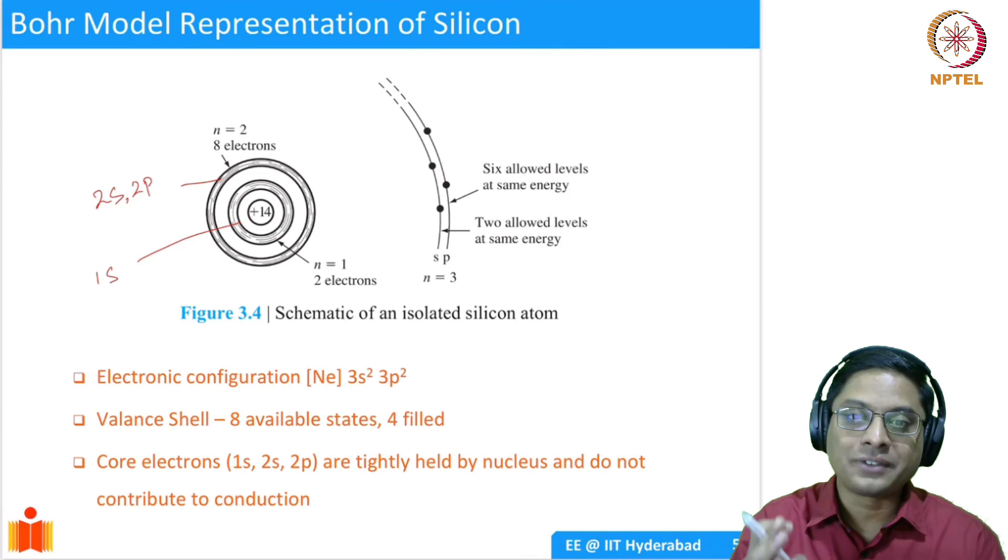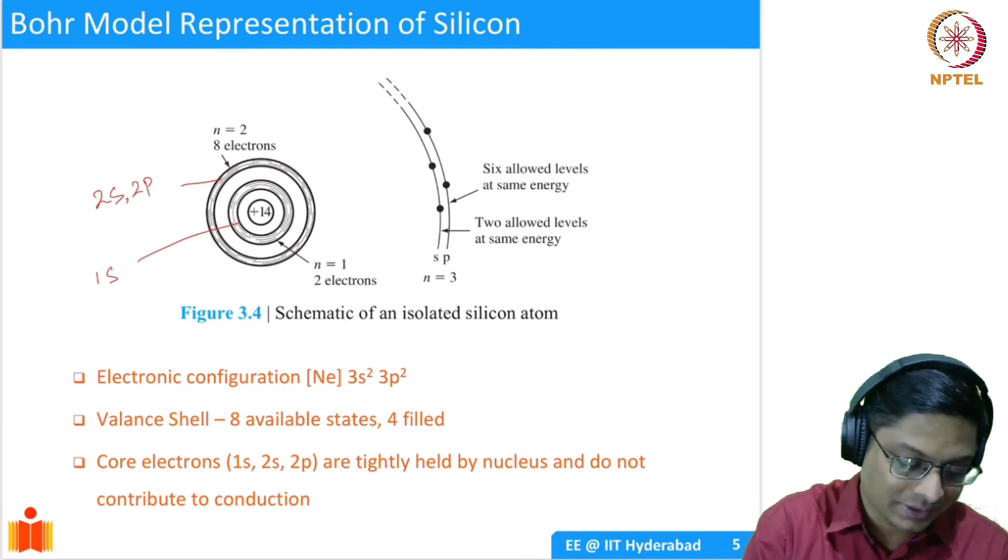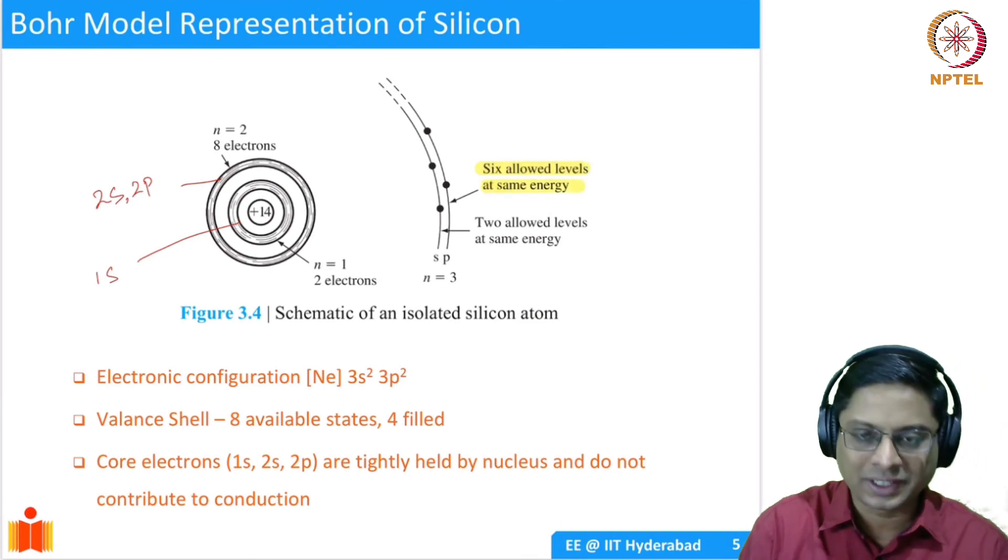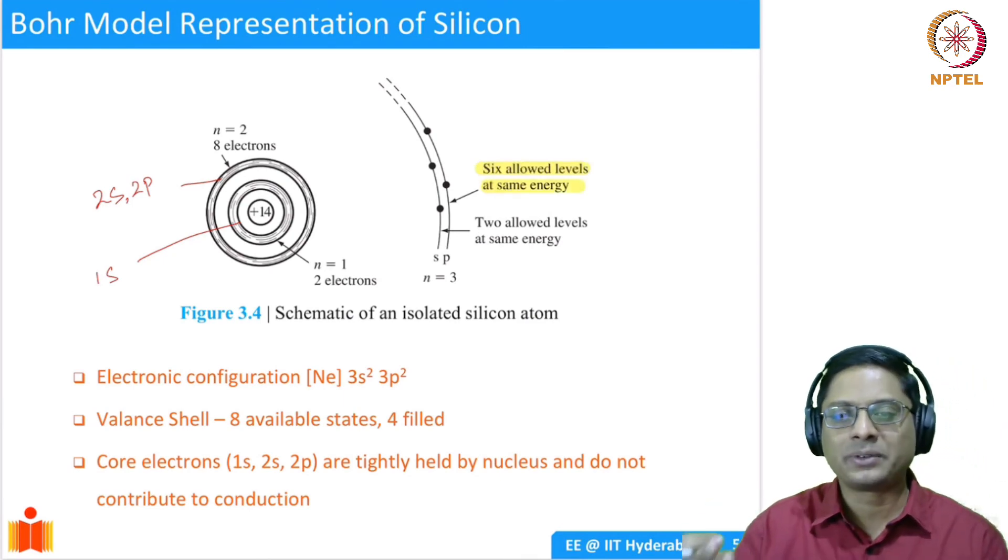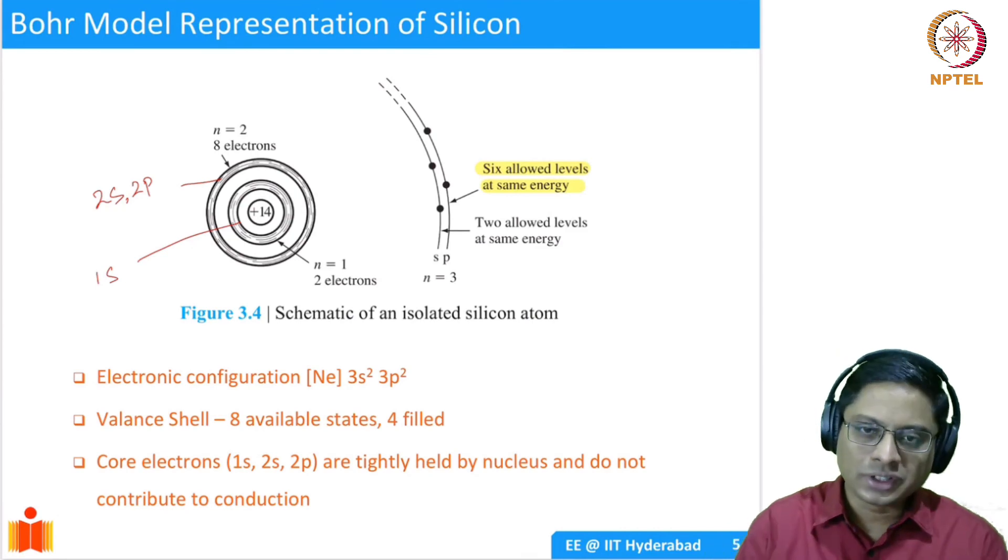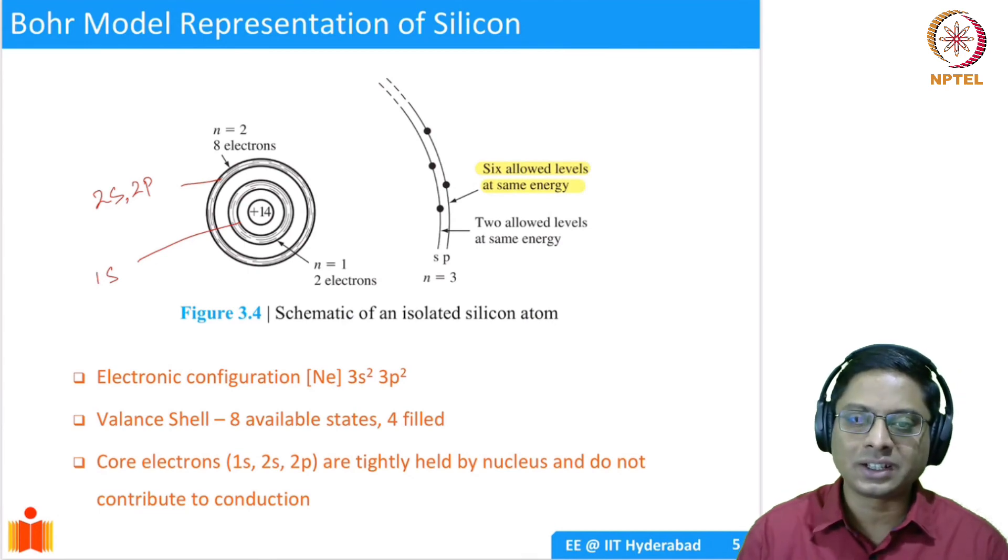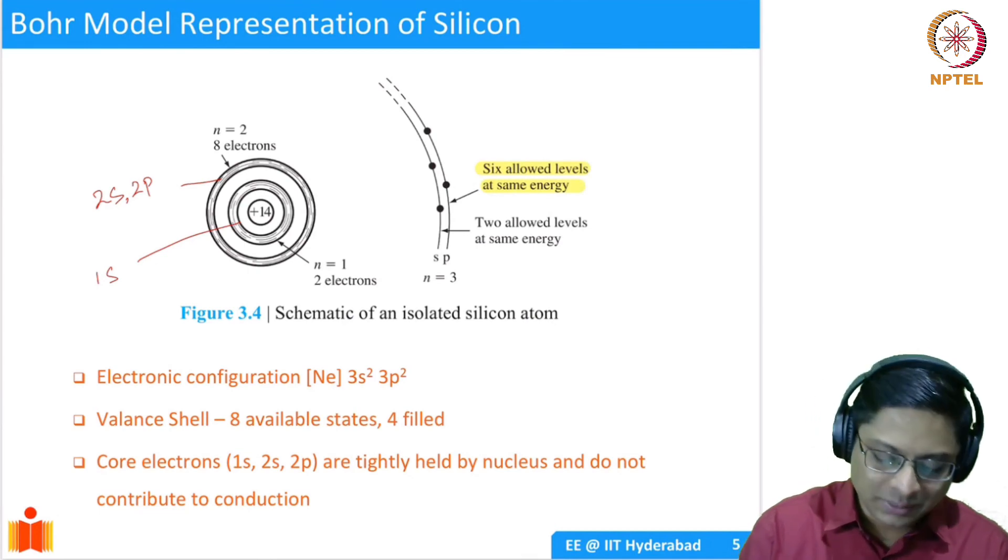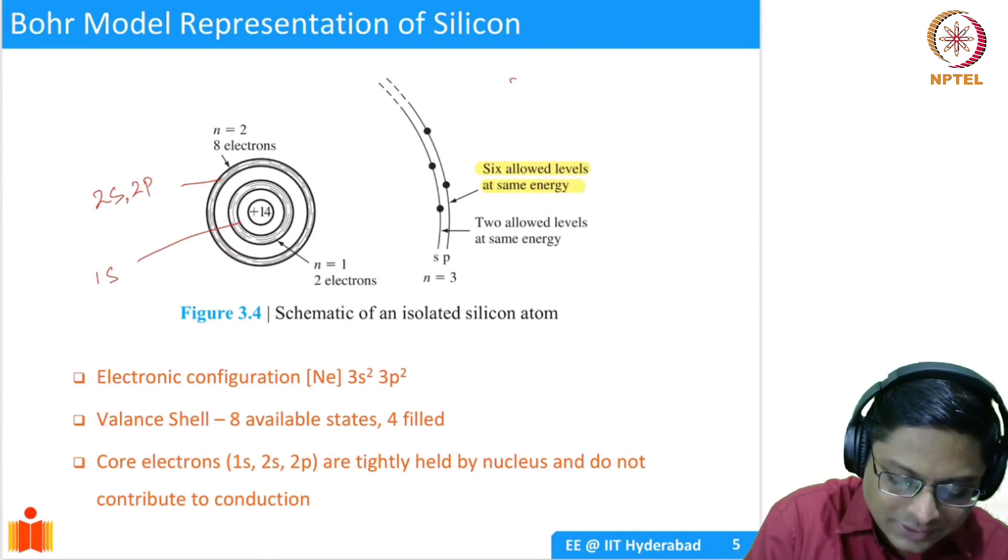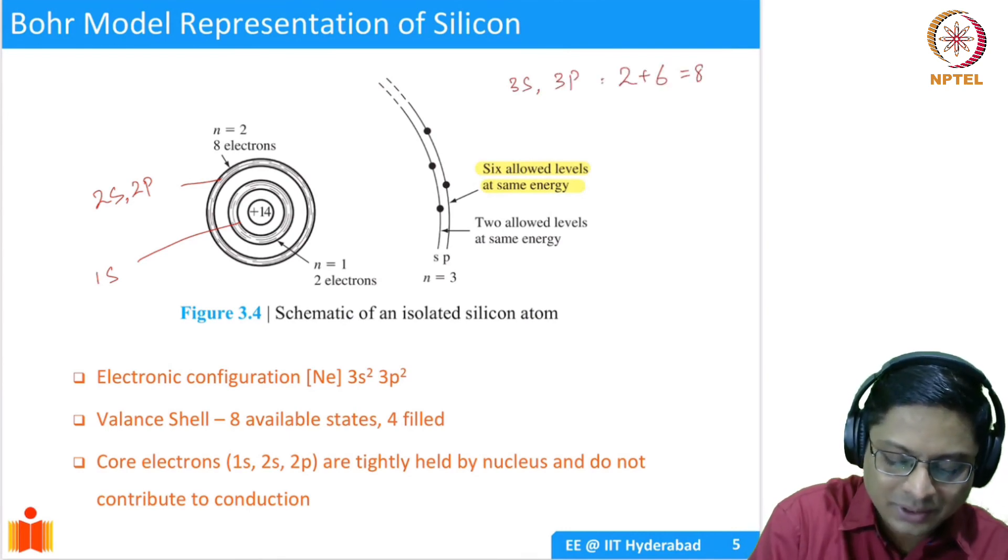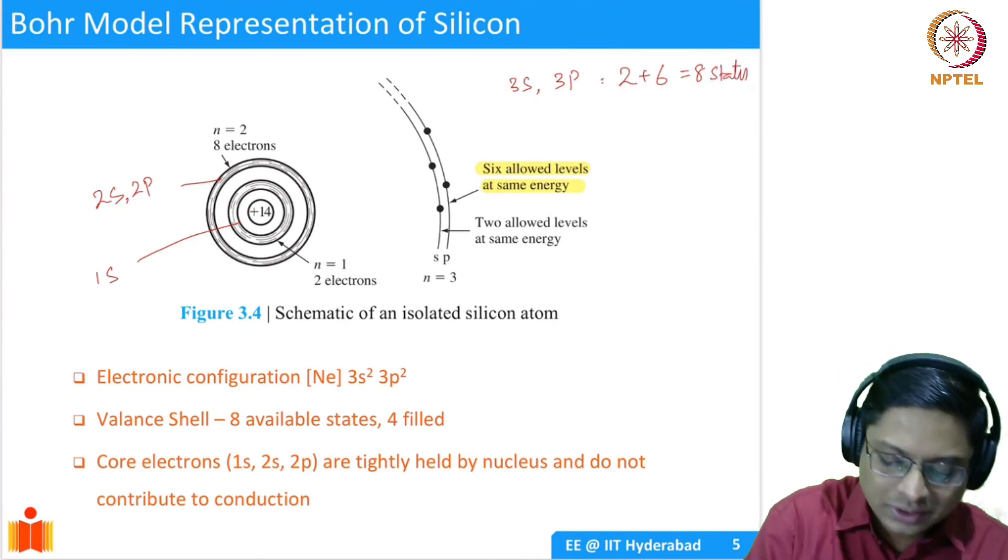The second shell is consisting of 2s and 2p, which has again, in total, eight electrons, because 2s is 2, and then 2p has in total six electrons. Then you have the third shell, which is n equal to 2, where you have s and p orbitals. The s orbitals are filled up, two of them, but the p orbitals have six allowed states. This is important. This makes a big difference. So they have six allowed levels in the p orbital. Because we have 3px, 3py, 3pz. Out of which, there are only two of them which are filled up.